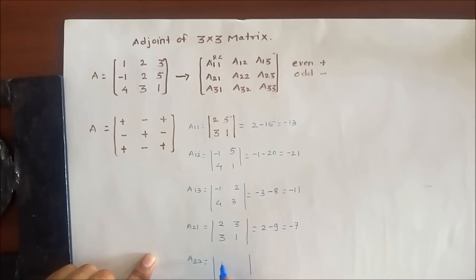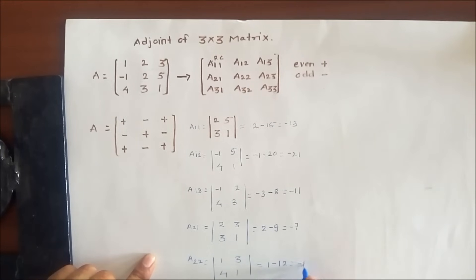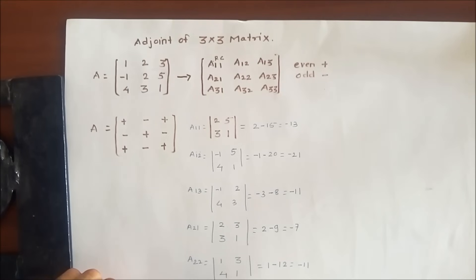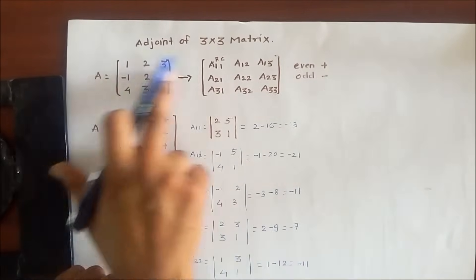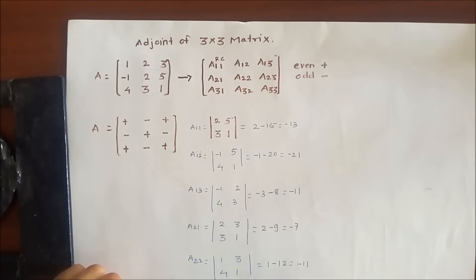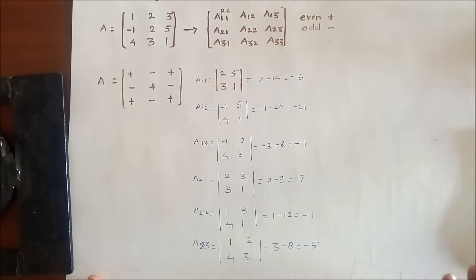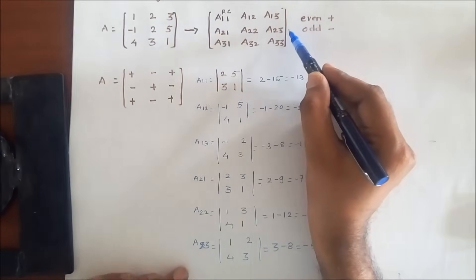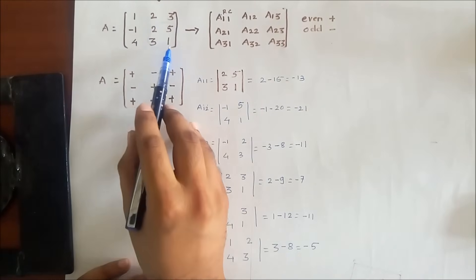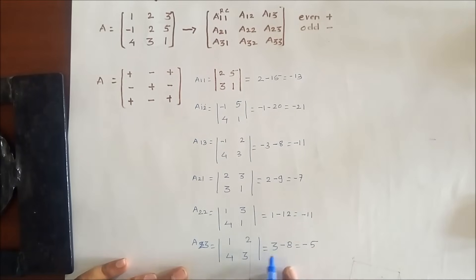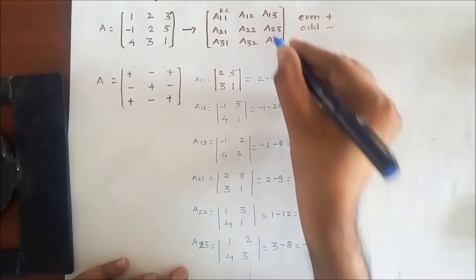For A22, hiding second row and second column, we get [1, 3; 4, 1], giving 1 minus 12 equals minus 11. For A23, hiding second row and third column, we get [1, 2; 4, 3], and the determinant gives 3 minus 8 equals minus 5.